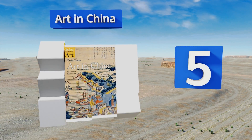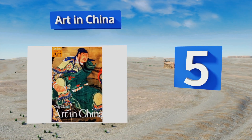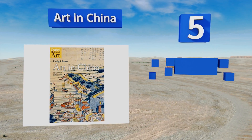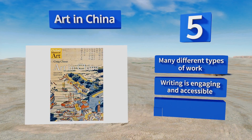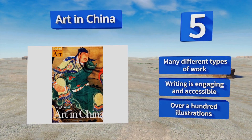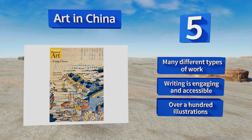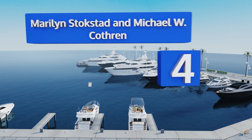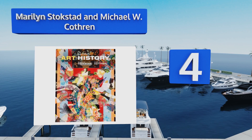Halfway up our list at number five, for a solid overview of the largest Asian country's tradition, Art in China covers the development of its visual culture over the past 5,000 years, encompassing early religious pieces as well as contemporary media works. This is a great introduction to the region, covers many different types of work, the writing is engaging and accessible, and it contains over a hundred illustrations.